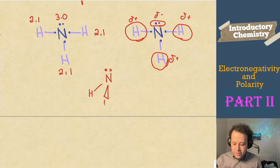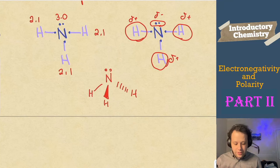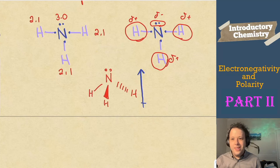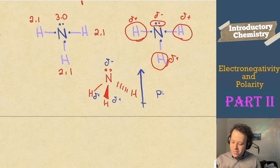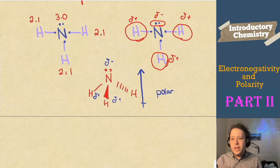With the trigonal pyramidal shape, the hydrogens point down like an upside-down umbrella. The overall positive side is at the bottom, all pointing up toward nitrogen. So is NH₃ polar or non-polar? It's polar — more of the electron density is on the nitrogen side versus the other.